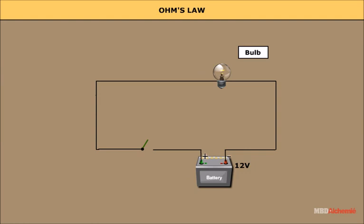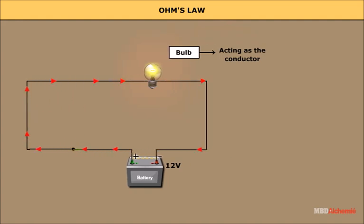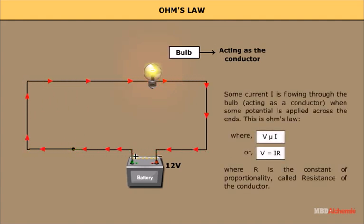Ohm's Law. Here a battery of 12 volts is connected to a bulb which is acting as a conductor. As the circuit is complete, the bulb starts glowing. It implies some current I is flowing through the bulb. This is Ohm's law, where V is proportional to I.